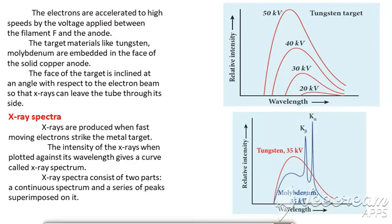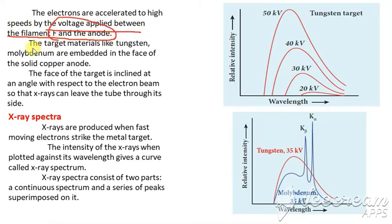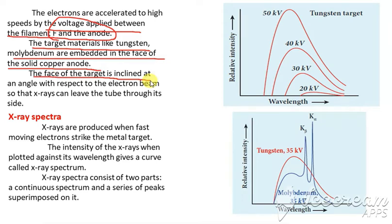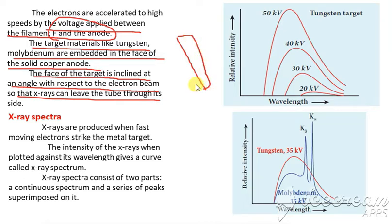The electrons are accelerated to high speeds by the voltage applied between the filament and the anode. The target material — such as tungsten or molybdenum — is embedded in the face of a copper anode. The face of the target is inclined at an angle with respect to the direction of the X-rays.